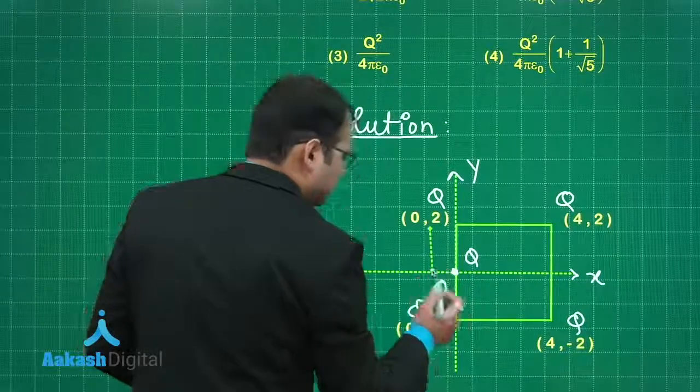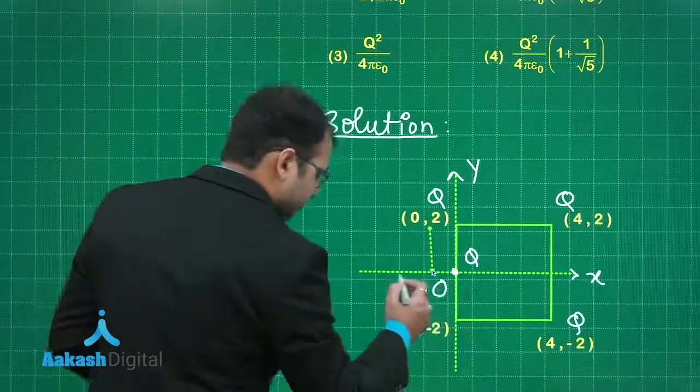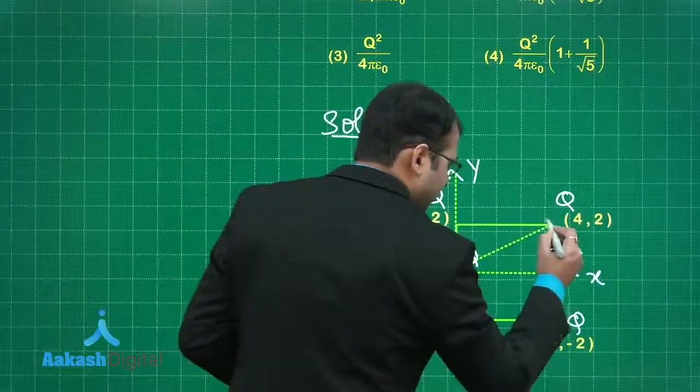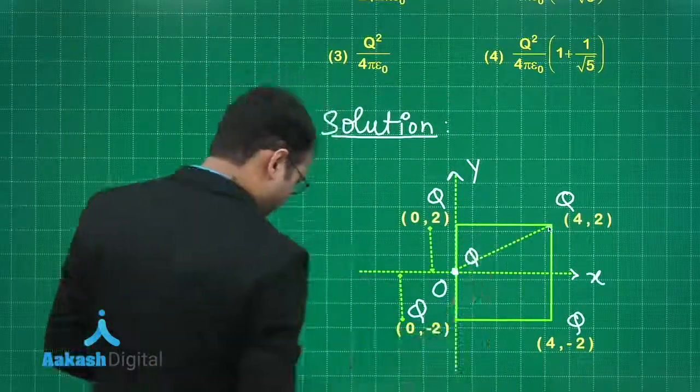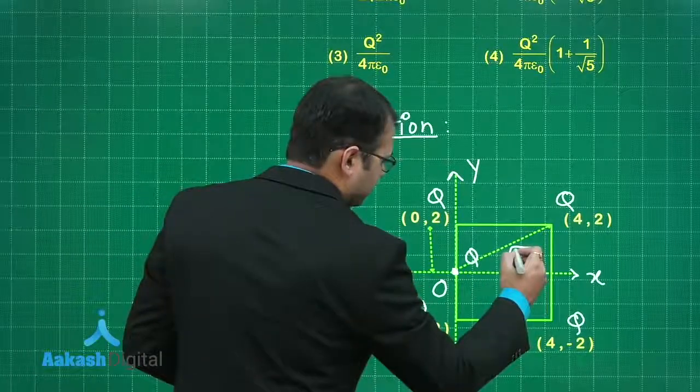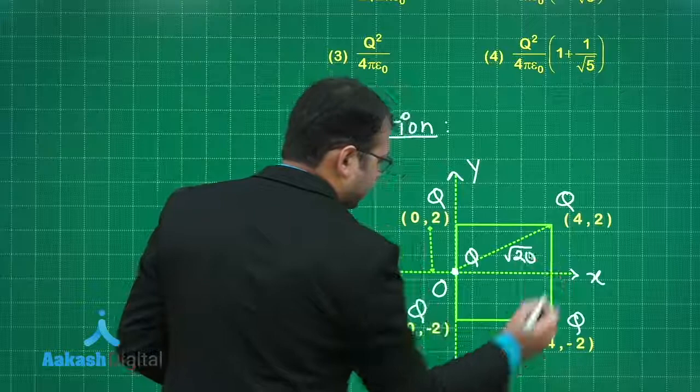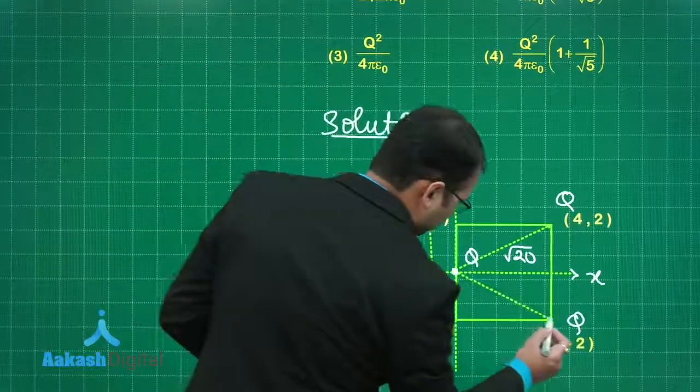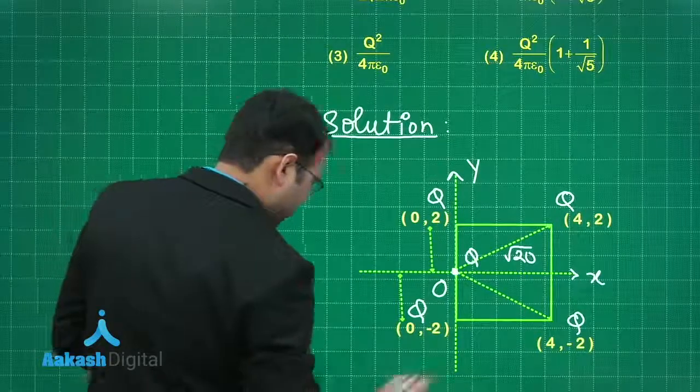Distance from here to here would be 2. Distance from here to here would be again 2. Distance from here to here, this is 2 this is 4, you can find that this would be under root of 2 square plus 4 square equals root 20. Similarly on the same lines this will be also root 20.